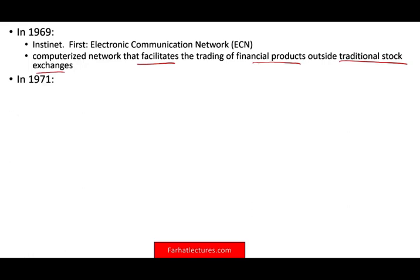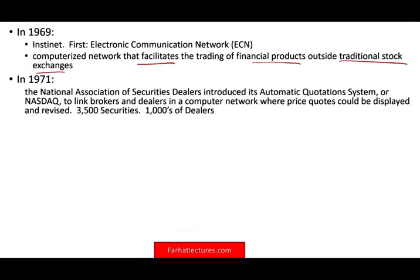In 1971, we started to have what's called the National Association of Securities Dealers introduce the automated quotation system, known as NASDAQ. It linked brokers and dealers in a computer network. However, at that point, NASDAQ was only designed for price quotes — they could display and revise quotes. Today NASDAQ has over 3,000 shares on it and thousands of dealers, but it all started as basically a screen telling you what the prices are.